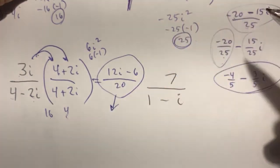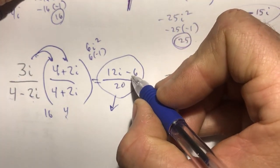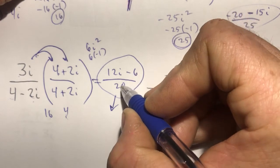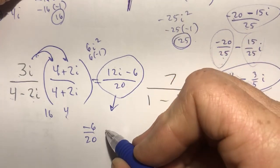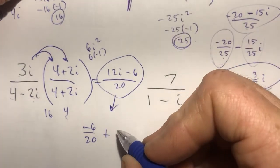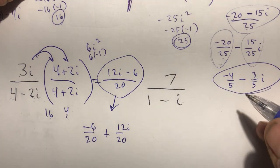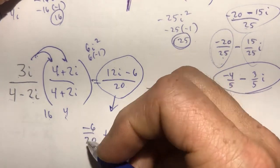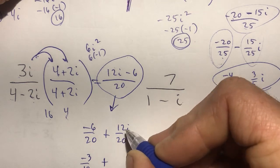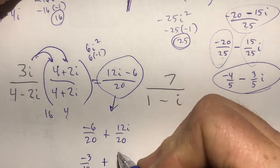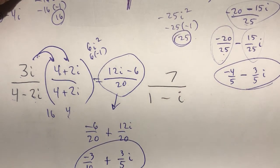I need to split it up to identify real and imaginary parts. The negative 6 is the real part, so I put negative 6 over 20 first, then the imaginary part: plus 12i over 20. Simplifying: 2 goes into both negative 6 and 20, giving negative 3 over 10. Then 4 goes into 12 three times and into 20 five times, giving plus 3 over 5 i. So my final answer is negative 3 over 10 plus 3 over 5 i.